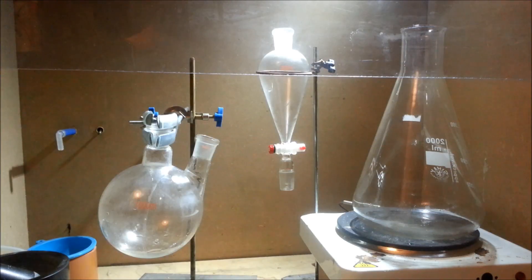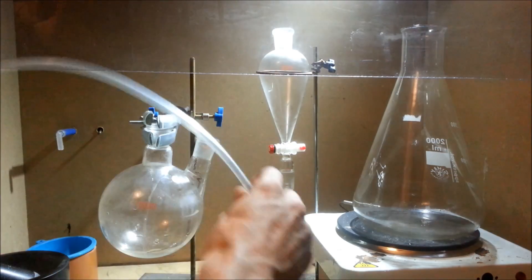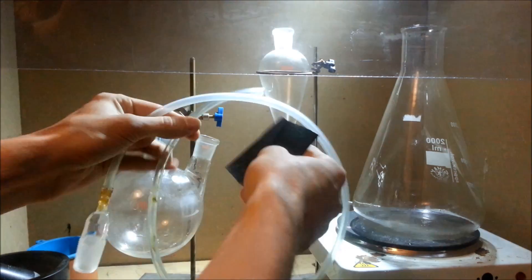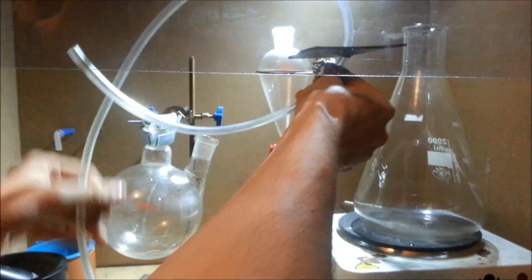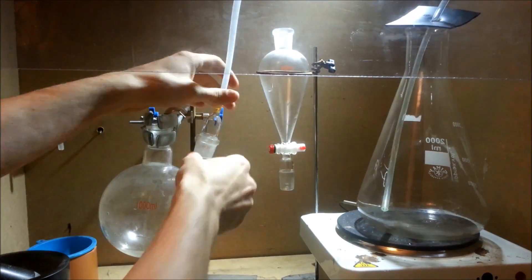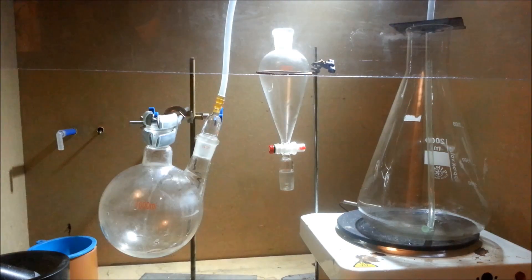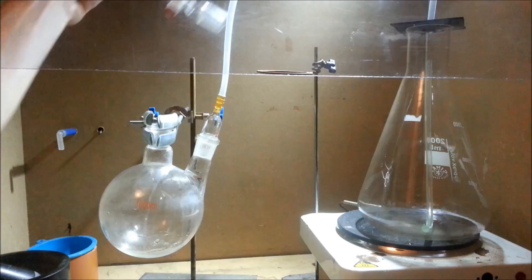A 1 liter round bottom flask was fitted with a PVC hose, which was then fed through a makeshift rubber lid, going down into a 2 liter Erlenmeyer flask. A separatory funnel was then placed atop the round bottom flask.